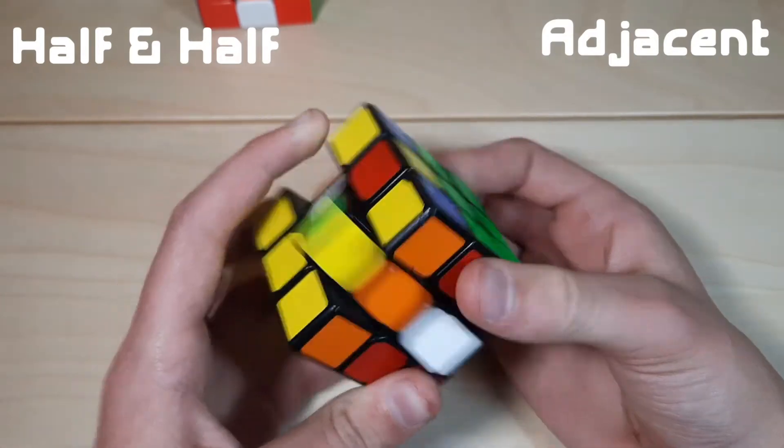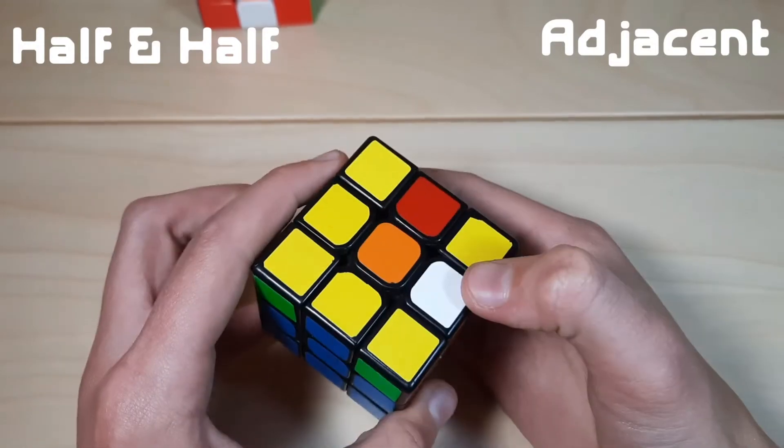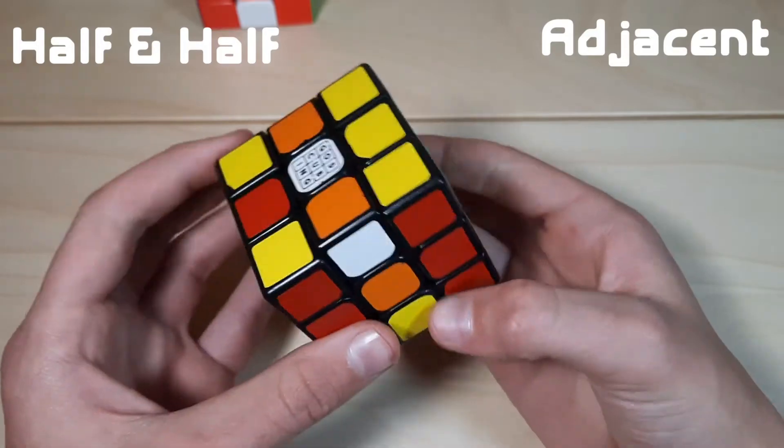Same thing. Slicing, flipping this one, doing the U moves that we can flip this one. Just make sure you're trying to keep it in the top layer, because if it goes down here, that's not a good arrow.